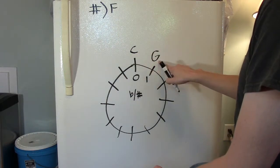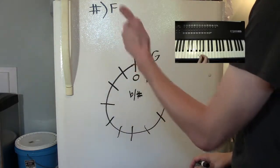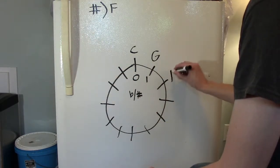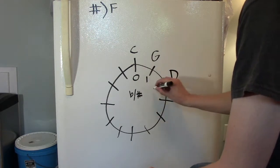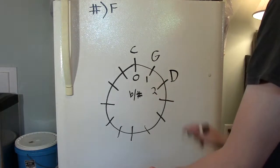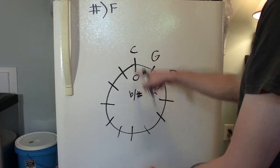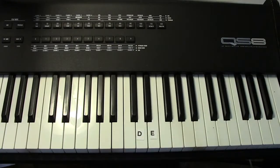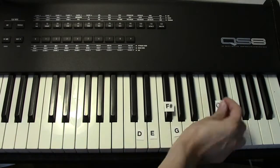To discover our next key, we need to go up a perfect fifth. G, A, B, C, D. And that brings us to the key of D major. D major has two sharps in it. They are F sharp and C sharp.